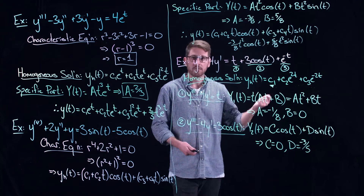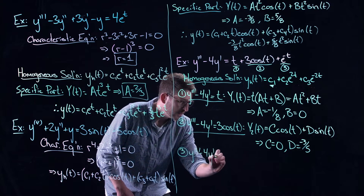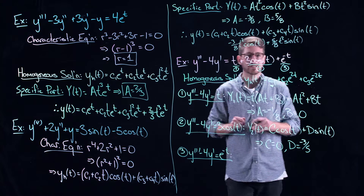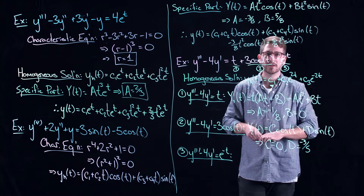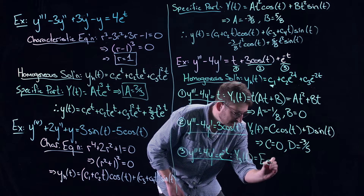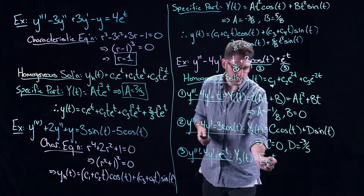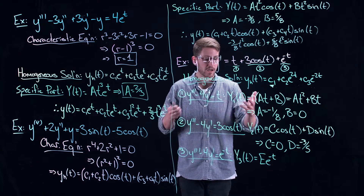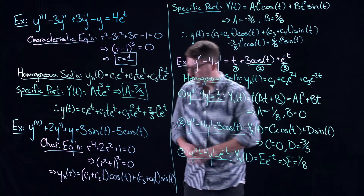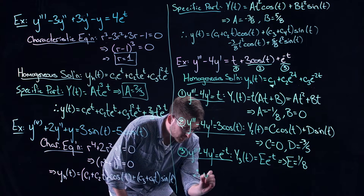For y''' - 4y' = e^(-t): e^(-t) is not a solution to the homogeneous equation, so the specific part with an undetermined coefficient is Ee^(-t). Working through it, E = 1/15. So we are now done with all three pieces.